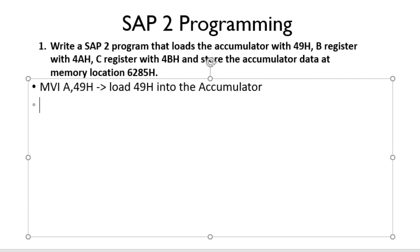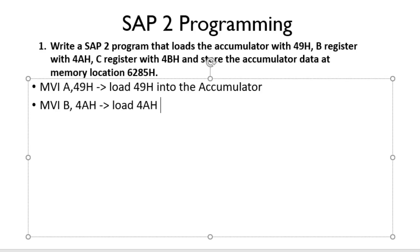Next, we need to load the B register with 4H. The same MVI instruction will do our job. So MVI B, then after 4H. This instruction will load 4H into the B register.